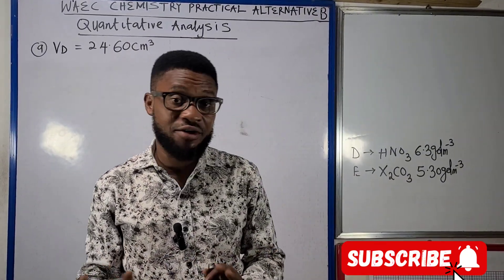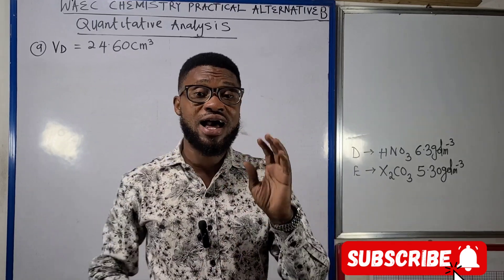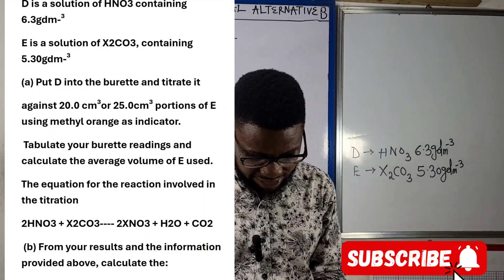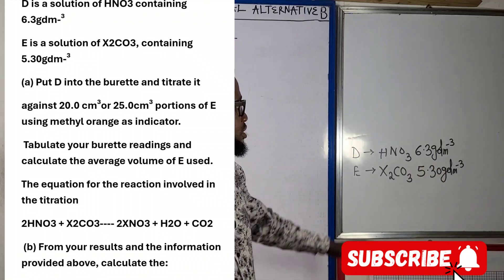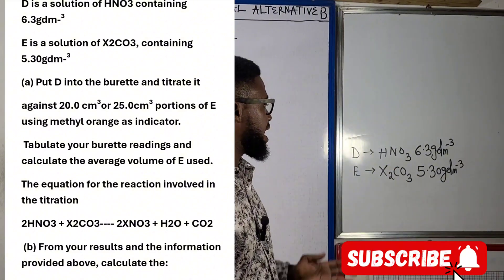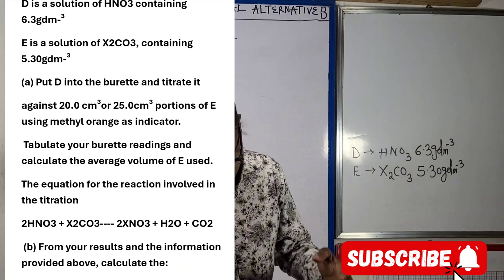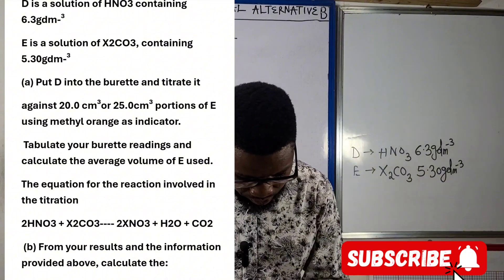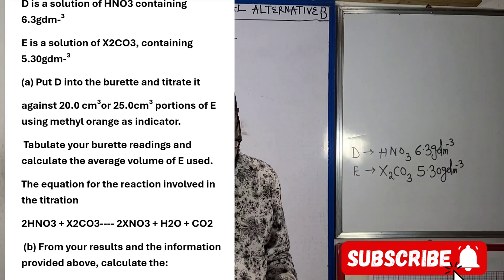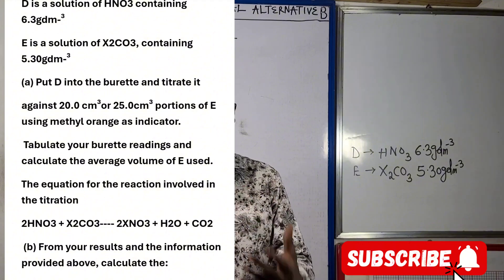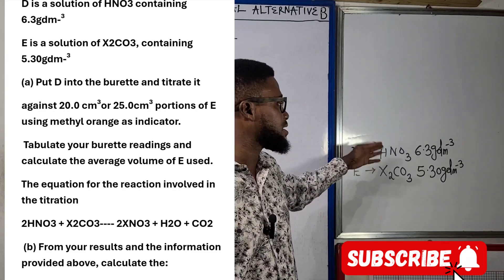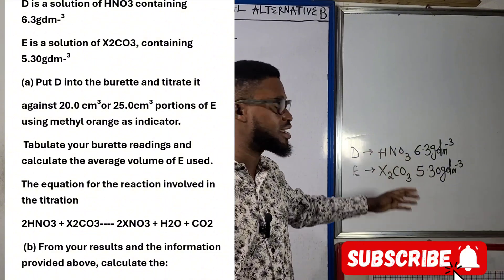Having looked at various arrays of questions, let's look at what our question exactly looks like in the course of this exam. As you can see on screen, D is a solution of HNO₃ with mass concentration 6.3 g/dm³. E is X₂CO₃ with mass concentration 5.30 g/dm³. Instruction A: put D into a burette and titrate against a 20 cm³ or 25 cm³ portion of E using methyl orange as indicator. When you put methyl orange in the carbonate, the color will be yellow.